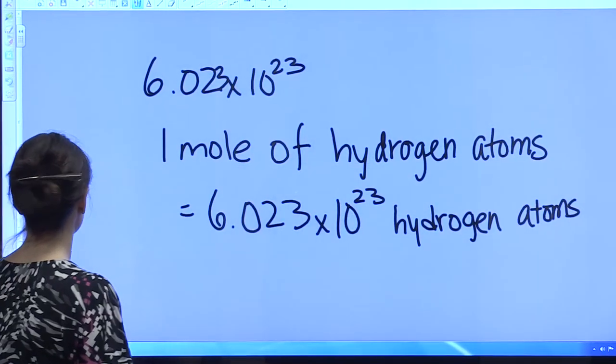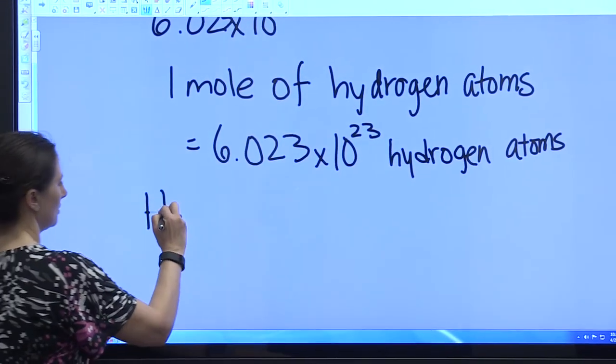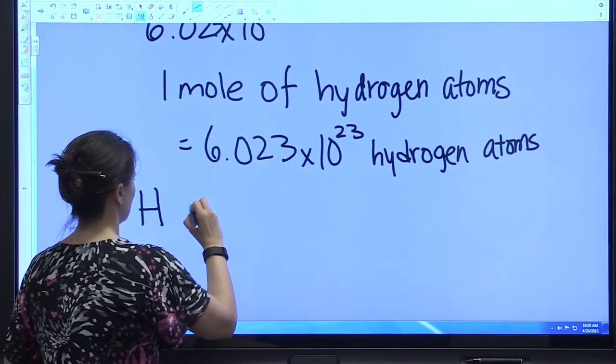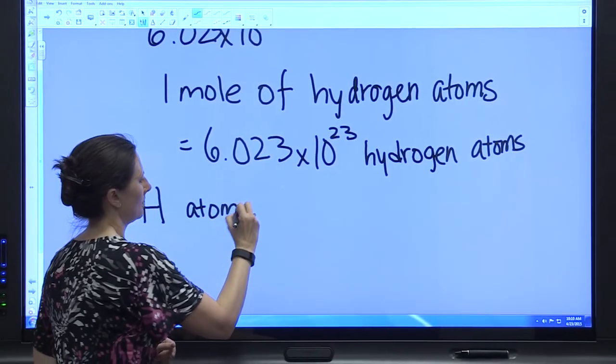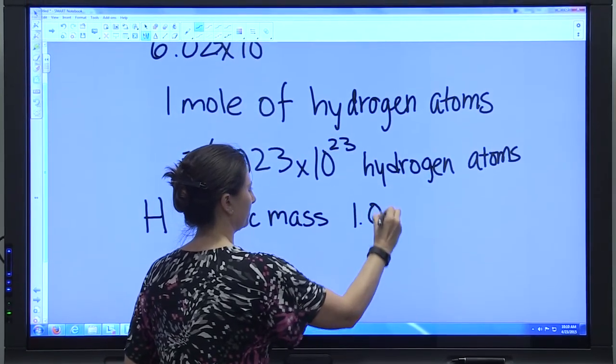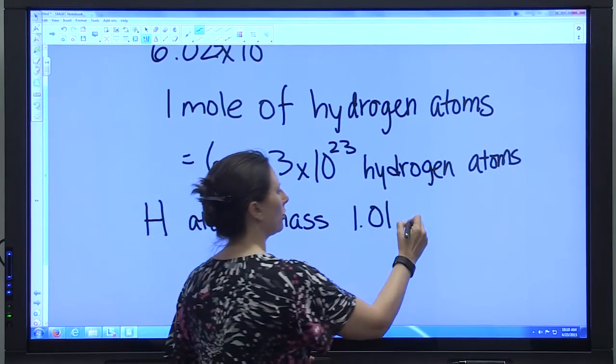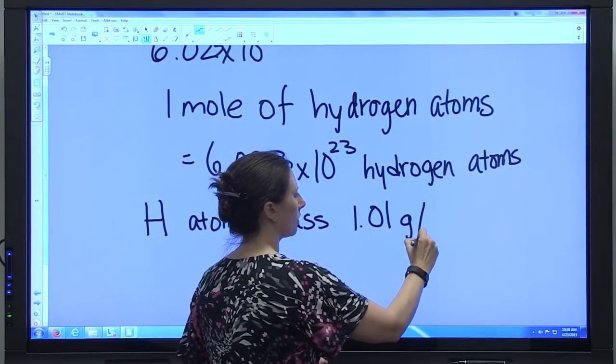So what does that mean in terms of our moles? Let's write this down. Atomic mass of 1.01. And that's 1.01 grams per mole.